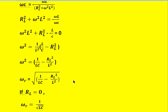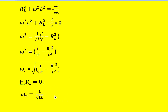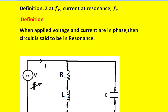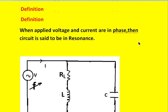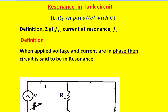In this tank circuit, if R_L is zero, then the resonance frequency will become 1 divided by the square root of L·C, which is also equal to the resonance frequency of the series RLC circuit. To summarize: resonance frequency occurs when the impedance is maximum, the current is minimum, and the voltage across the circuit is maximum. It is also observed that resonance occurs when the current is minimum and the power factor is unity.